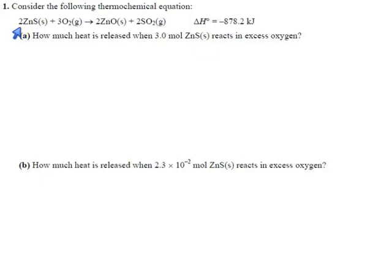So this means if you roast two moles of zinc sulfide, you'll get 878.2 kJ. Or you can think of it as for every three moles of oxygen that you consume, you'll get this much energy. Or for every two moles of zinc oxide you produce, you'll get this much energy. You can set up a lot of different ratios here, so let's see which one they want.